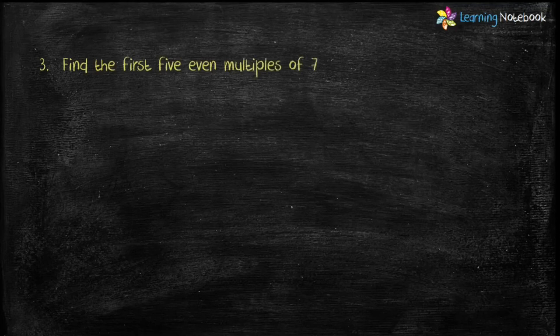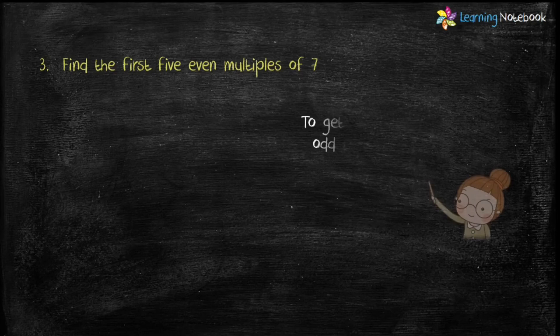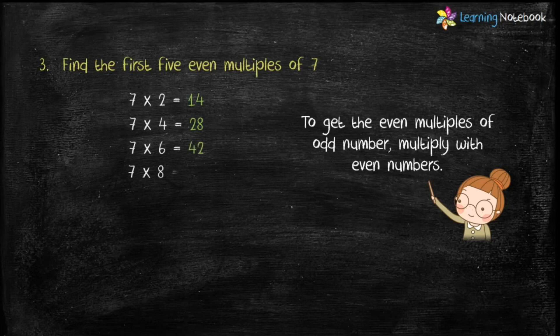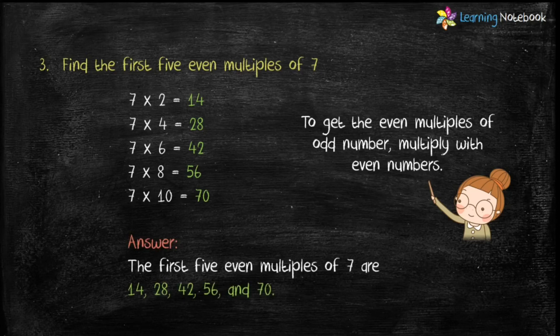Question three: find the first five even multiples of seven. In this question we have to find the first five even multiples. Since seven is an odd number, we will multiply seven by even numbers to get even multiples. So let's multiply seven by 2, 4, 6, 8, and 10. Therefore the first five even multiples of seven are 14, 28, 42, 56, and 70.